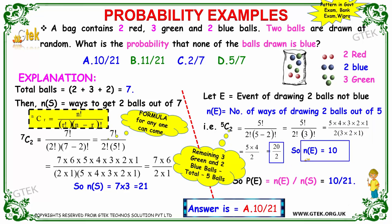So probability of an event is the possibility divided by the total number of sample space: 10 divided by 21. That's the answer, the option is A.